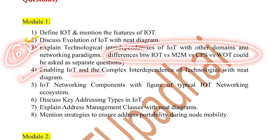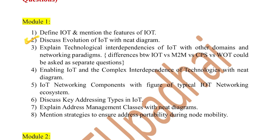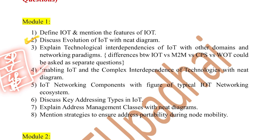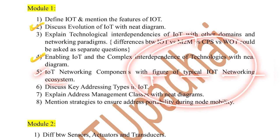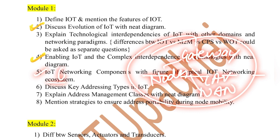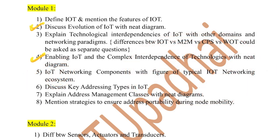Next, we have enabling IoT and complex interdependence of technologies with a need diagram. There are four planes here: service plane, local connection, global plane, and processing plane. This is an important topic which could be asked directly for 10 marks. We also have IoT networking components with a figure of a typical IoT networking ecosystem. The ecosystem comprises different nodes and gateways connecting them with LAN and WAN connections. There are six components in this, and this question could be asked for five marks.